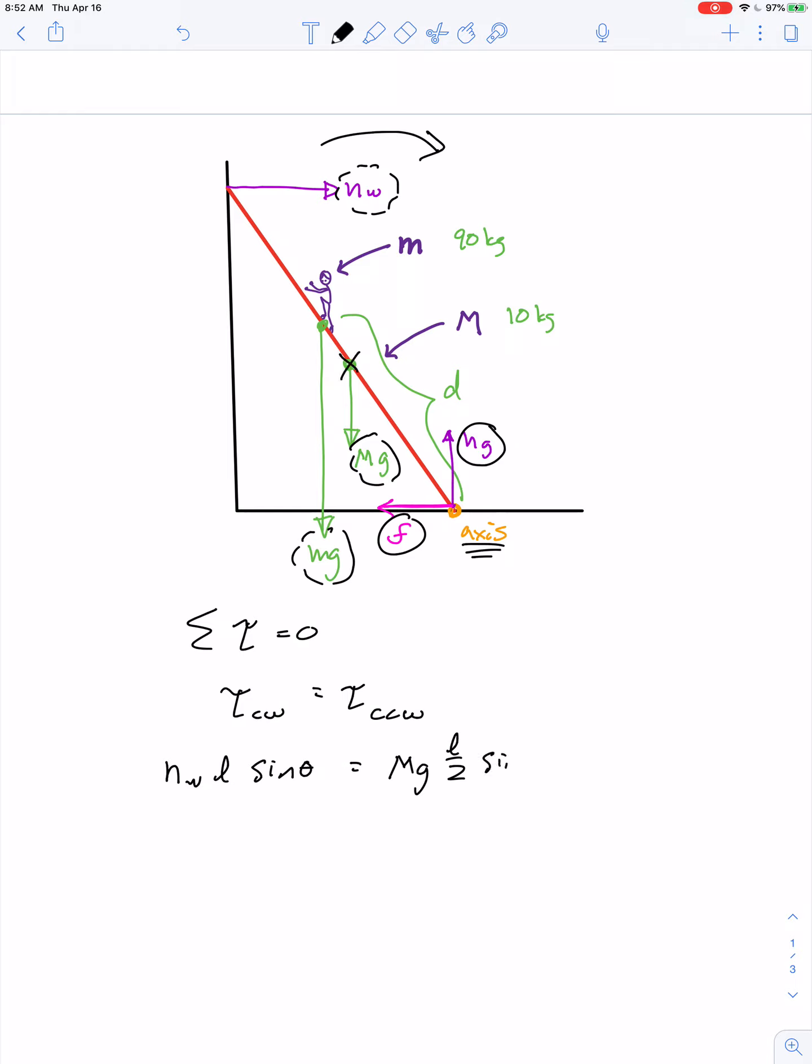And then the two counterclockwise torques: one of them is capital Mg acting with a lever arm of L over 2 because it's at the center of mass, and then sine of, wait if this is theta, this right here is 90 minus theta, so sine of 90 minus theta plus the force mg with a lever arm of d, also times sine of 90 minus theta. We'll cross out sine of 90 minus theta and replace it with cosine theta.